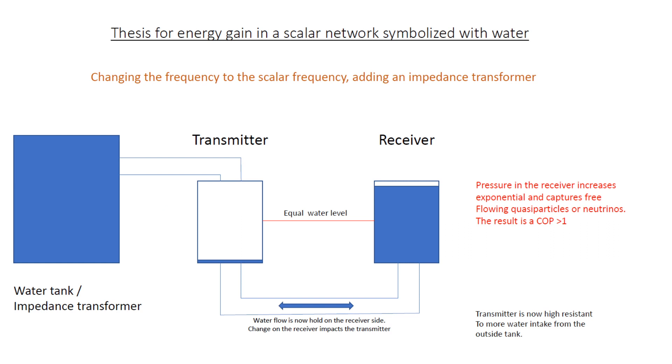In the last slide now here I show the impact an impedance transformer has. I symbolize it as a big tank on the side. It has an additional reservoir of water but needs only to swap a little bit over to the transmitter to have a tsunami wave effect to the receiver increasing the pressure dramatically on the receiver side. We are now capturing quasiparticles or neutrinos which are giving the vibration and energy to the receiver. The fluctuating of potential from positive to negative becomes polarized in the receiver. Now we measure is COP greater than 1.